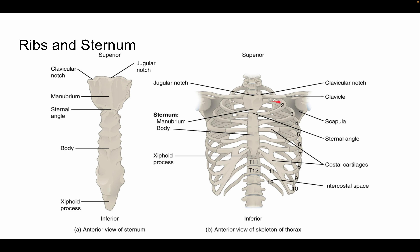Ribs one through seven each have their own costal cartilage and connect directly to the sternum with no shortcuts. For ribs eight through ten, you can see that rib eight connects to a small cartilage piece that merges upward and joins with the seventh rib's cartilage — that makes it a false rib. It doesn't make them any less effective, though.